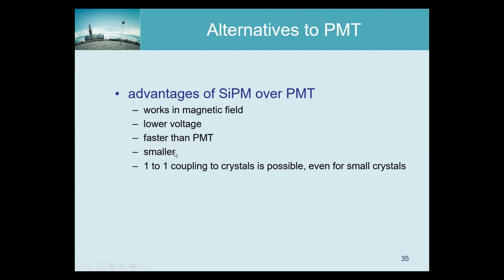SiPMs are much smaller than PMTs, which enables an additional advantage: instead of squeezing many crystals to read out with just four PMTs, one can use arrays of many SiPMs — in principle even one-to-one coupling of each crystal to its own SiPM. A disadvantage of SiPMs is that their characteristics are sensitive to temperature, which is particularly problematic in MR environments where changing magnetic fields and induced currents affect temperature. Serious cooling solutions are required to keep SiPM temperature stable.